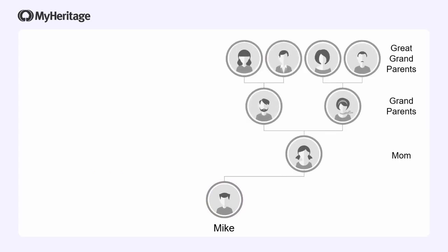Mike has a mom, a pair of grandparents, and four great-grandparents. From the mother's side, the great-grandparents are all coming from purple land — all the DNA from the grandparents inherited from the parents is also 100% purple. Meaning Mike's mom is 100% purple as well. So we can all be sure that Mike is 50% purple — because you get 50% from your mother and 50% from your father, and all of his mom's DNA is purple.